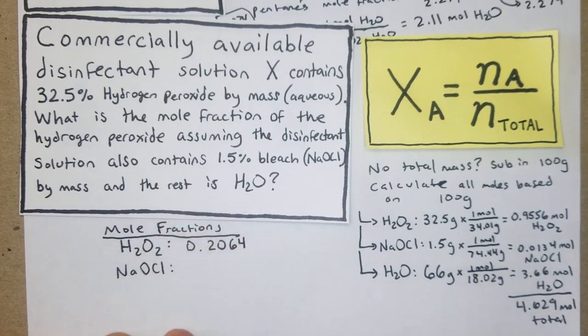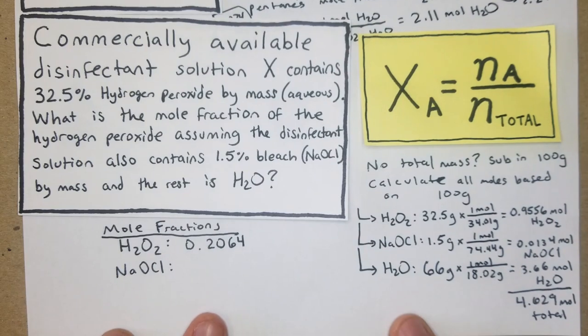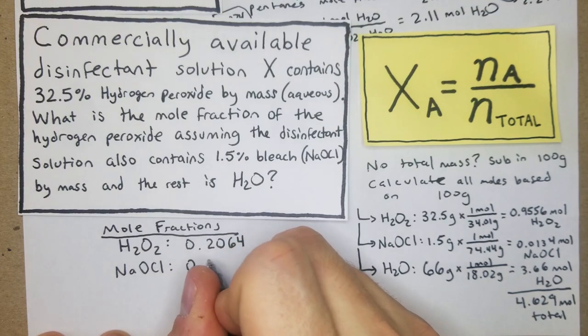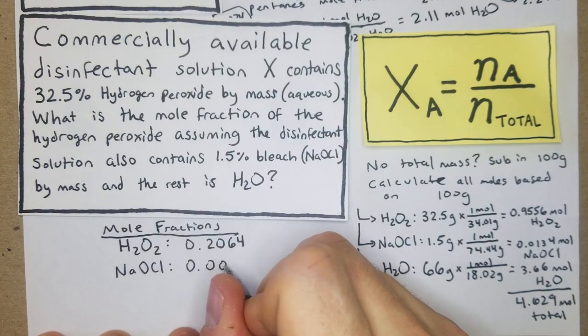Then we have NaOCl. Our NaOCl is going to be 0.0134 divided by 4.629, and we get 0.0029.